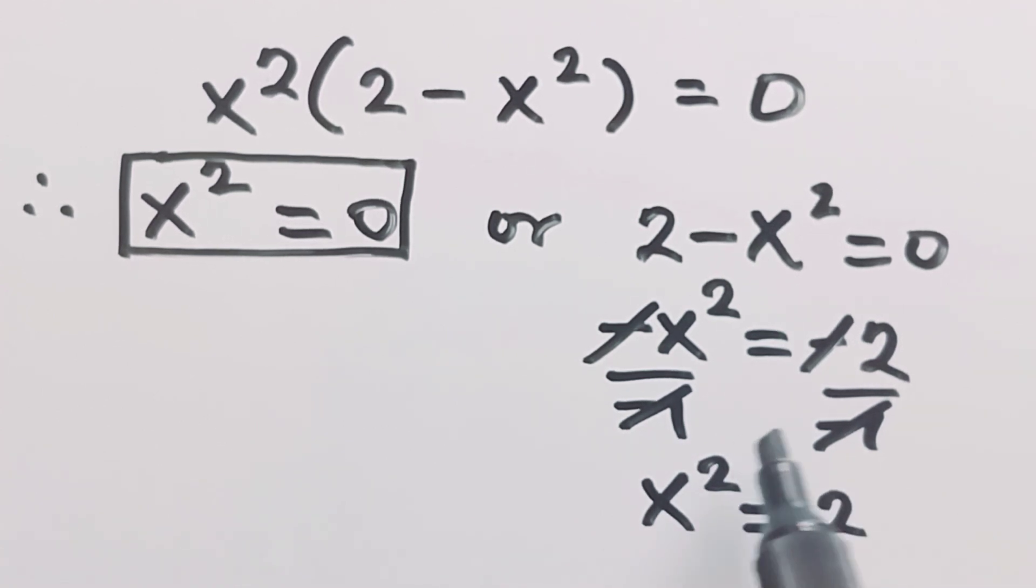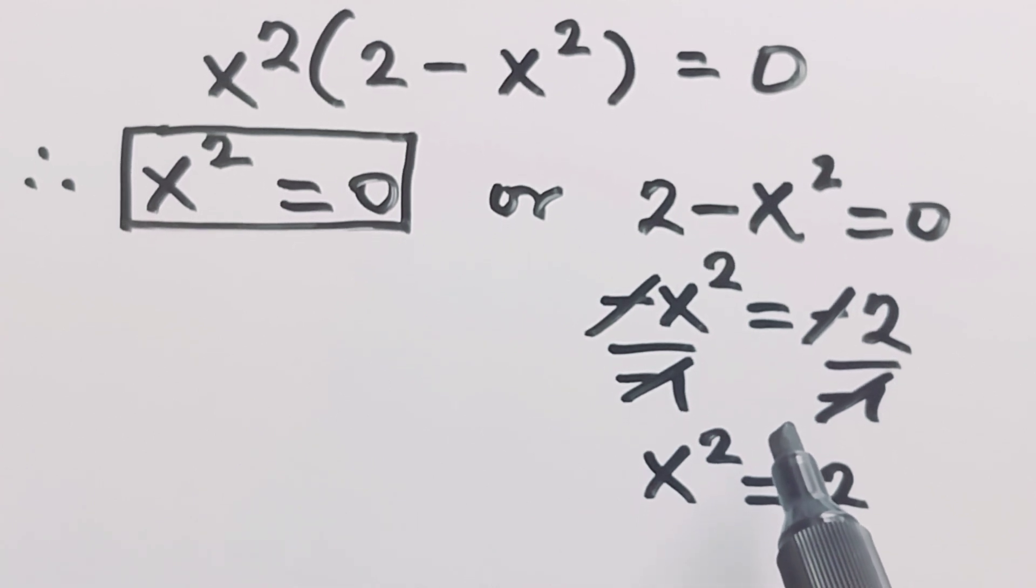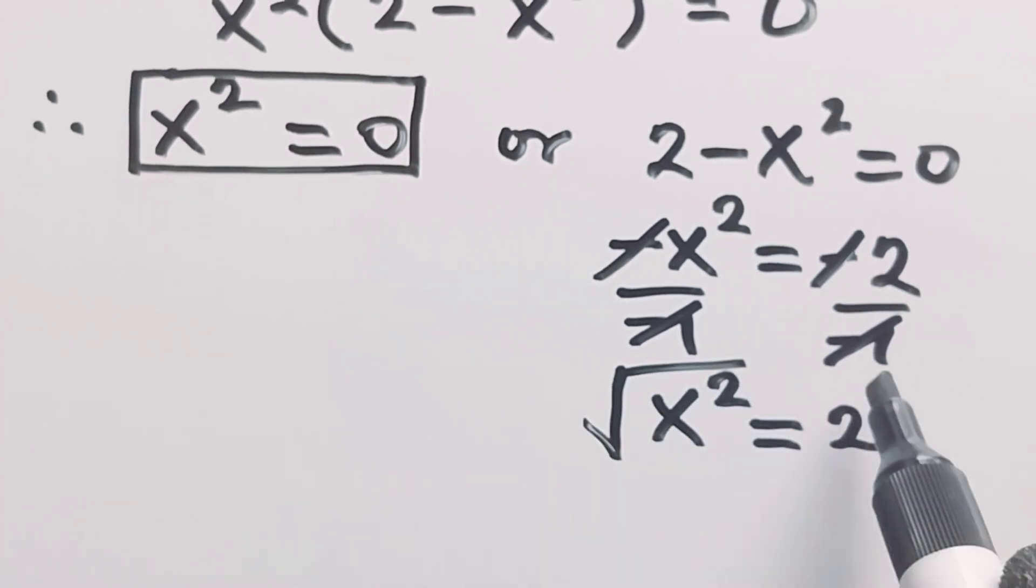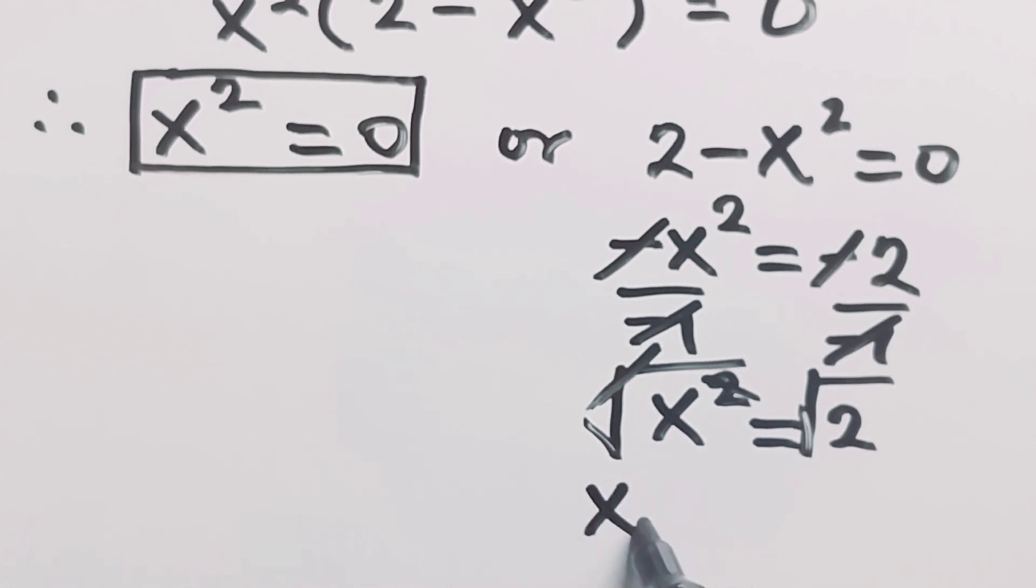We already know what to do from here. You can take the square root of both sides like this, and when you take the square root of both sides you now have your value for x to be plus or negative the square root of 2.